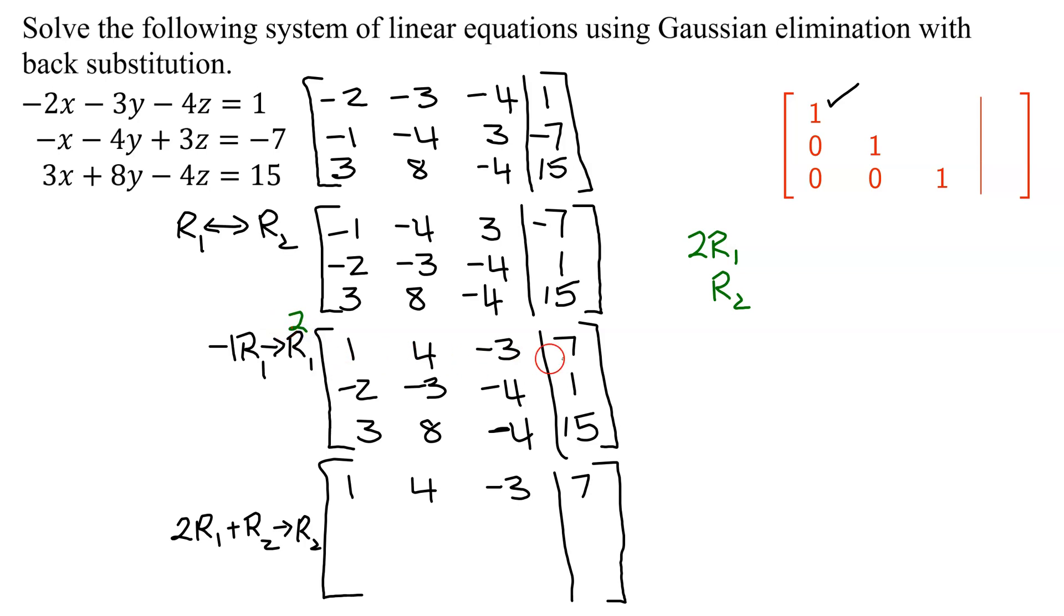So I need to do 2 times this row, so 2 times 1 is 2, 2 times 4 is 8, 2 times negative 3 is negative 6, and 2 times 7 is 14. Then we need to write row 2 underneath it, negative 2, negative 3, negative 4, and 1, and then we add them up. 2 minus 2 gives me my 0, 8 minus 3 is 5, negative 6 added to negative 4 is negative 10, and 14 plus 1 is 15.